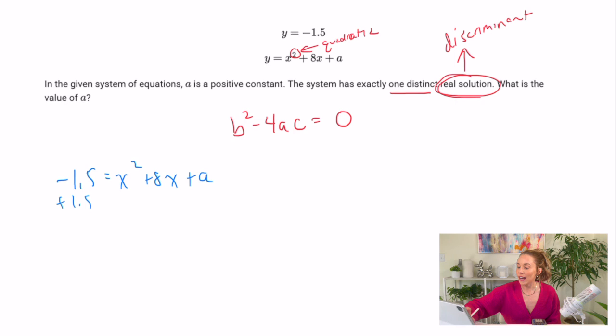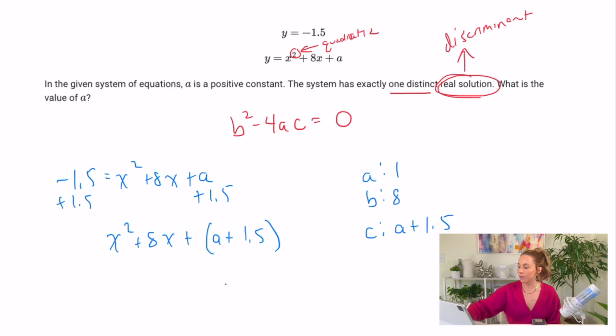Now I'll throw it into the discriminant. So I have 8 squared minus 4 times 1 times a plus 1.5, and that has to equal zero because I said there's only one real solution. Now I'm going to simplify, and there you have it, the answer was 29 halves.